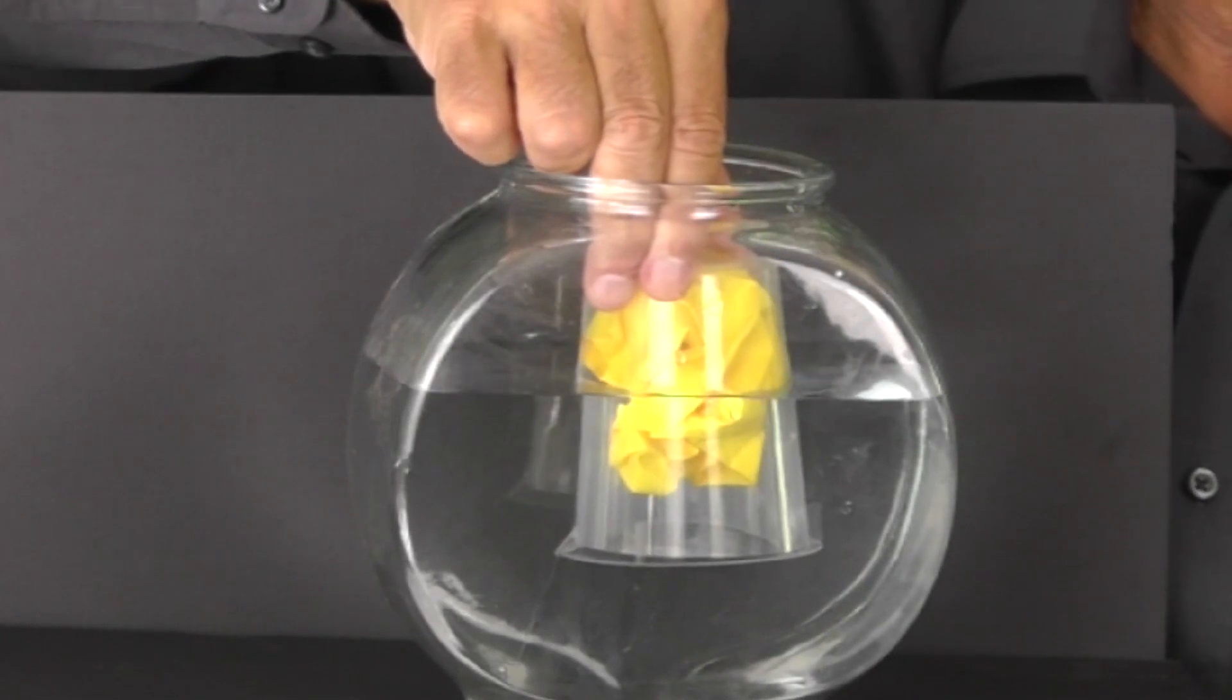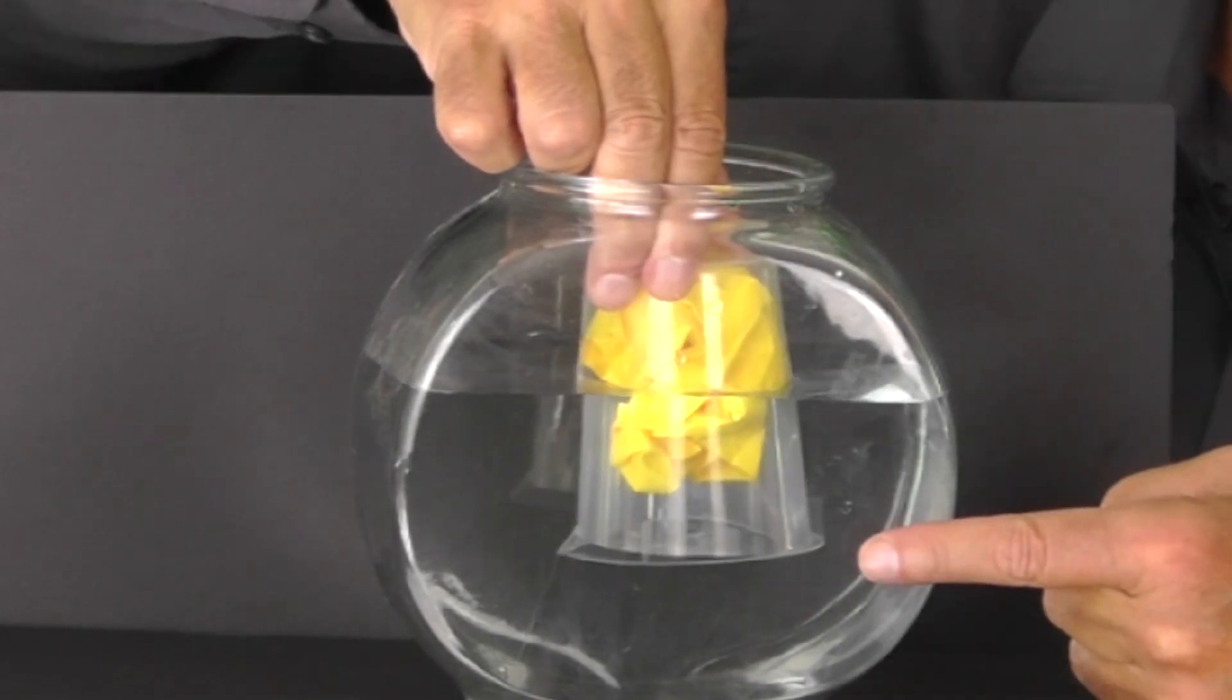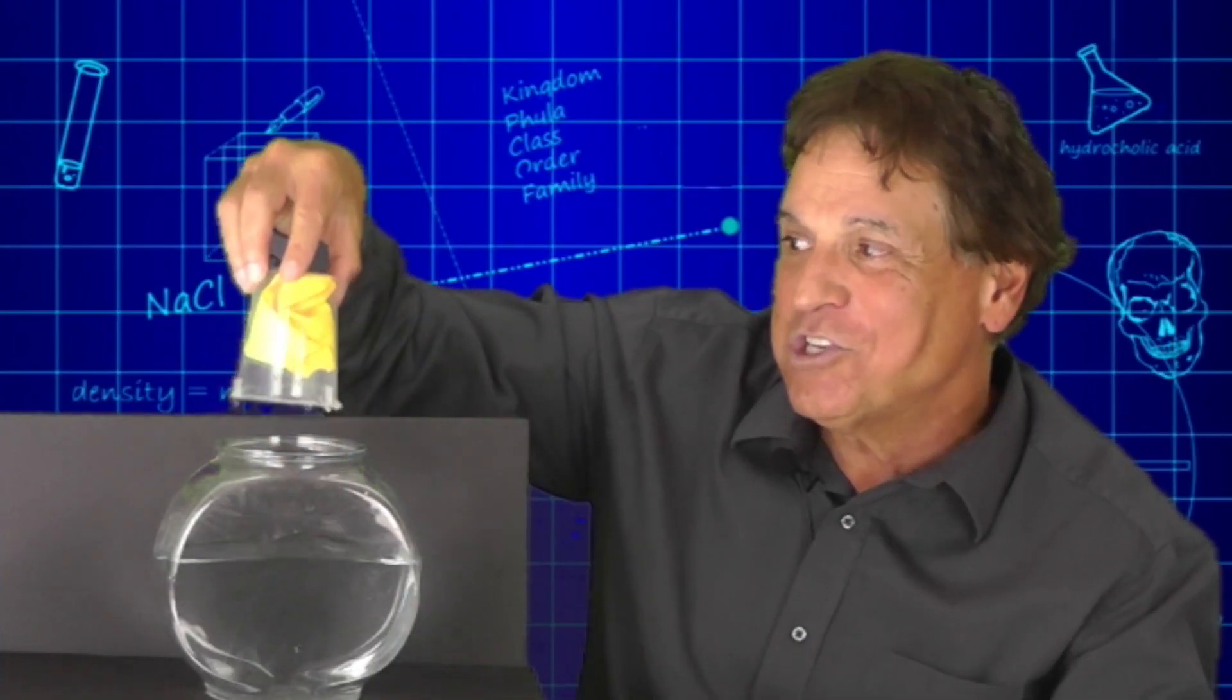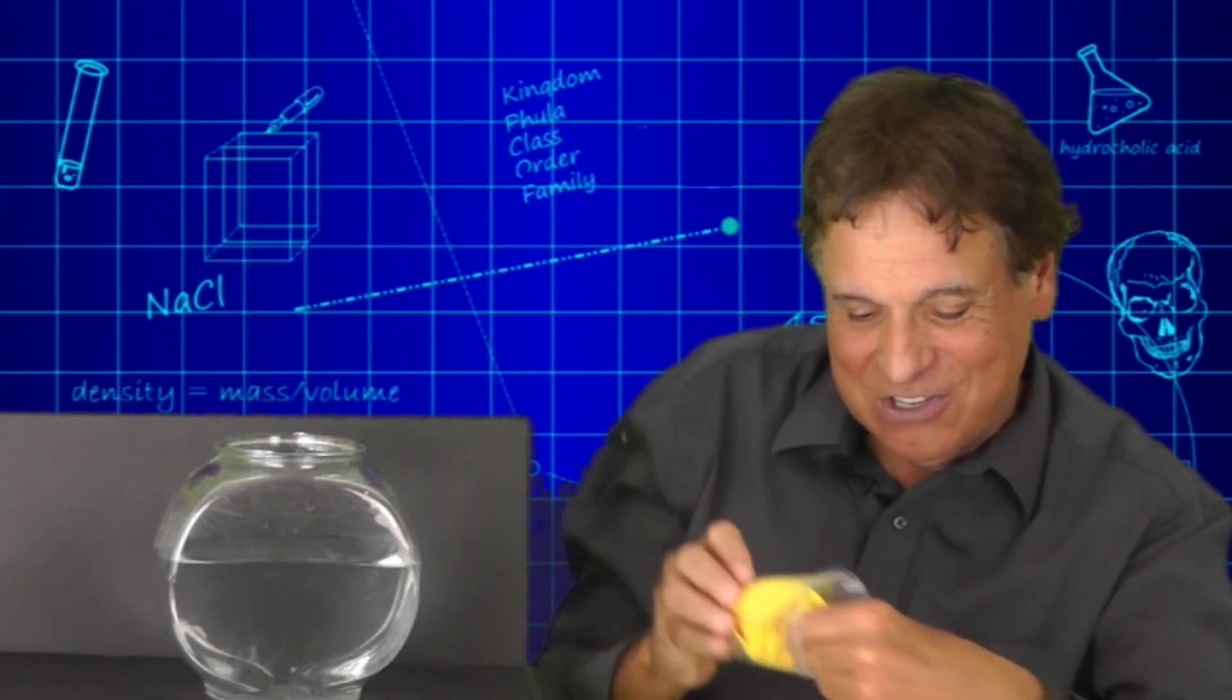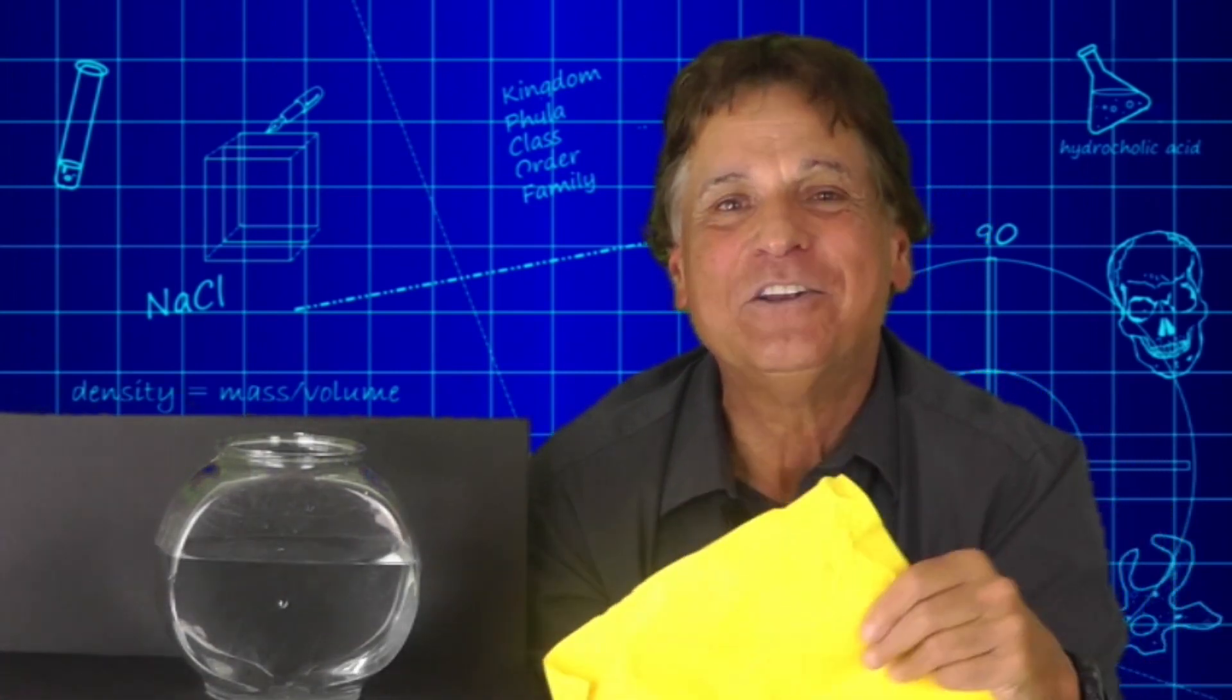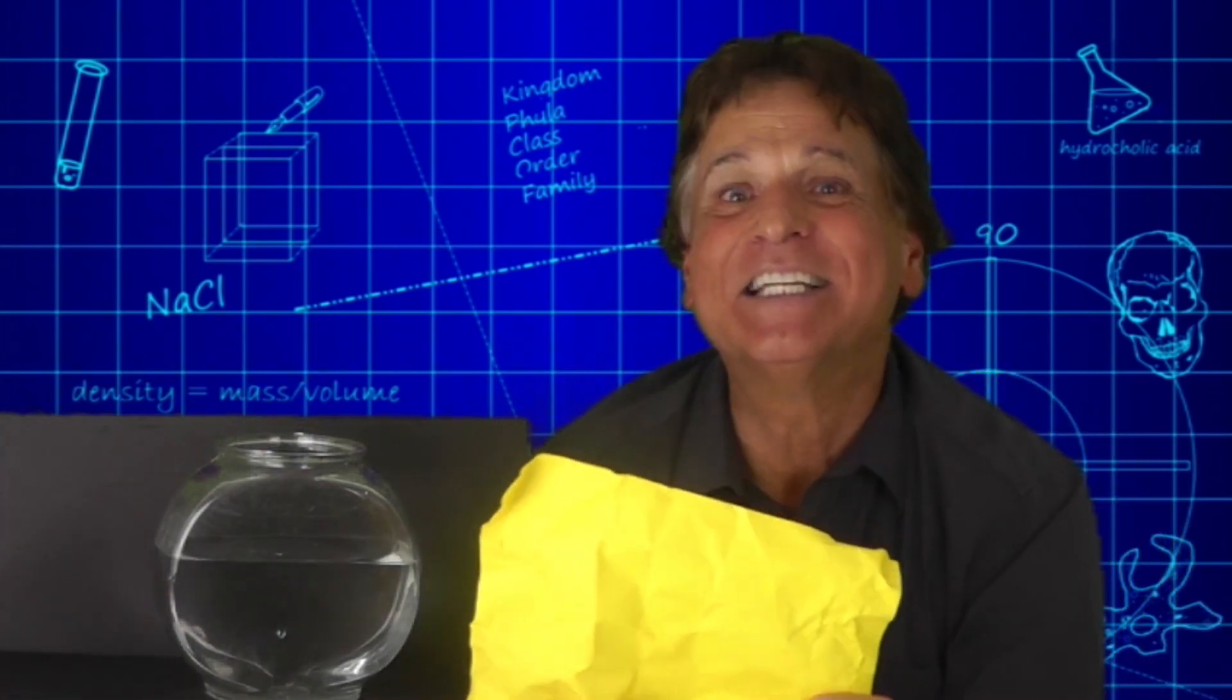Great. Take a look at the bottom of the cup. You might even be able to see the water line. Once you take the cup out of the water, show the paper to the students. And note, it is dry. It did not get wet.